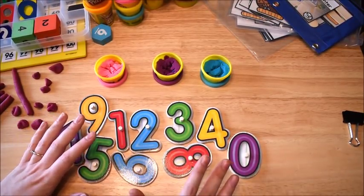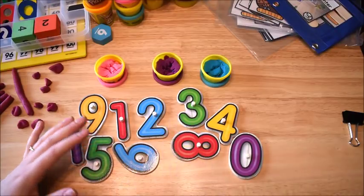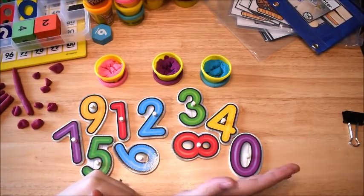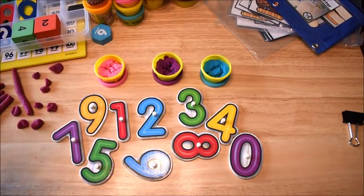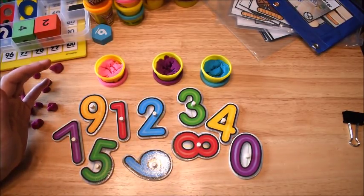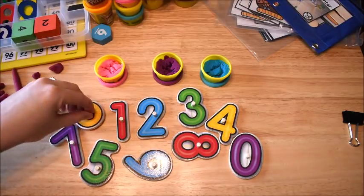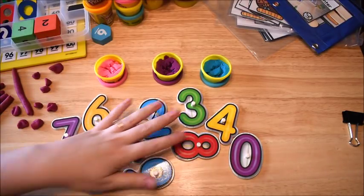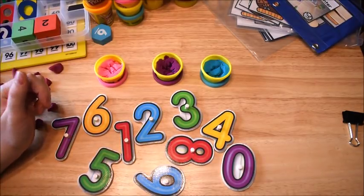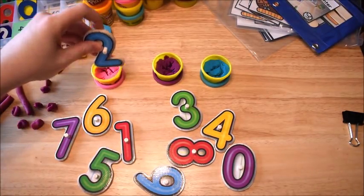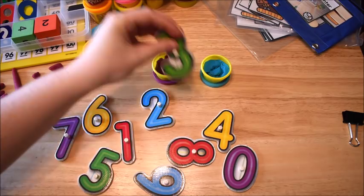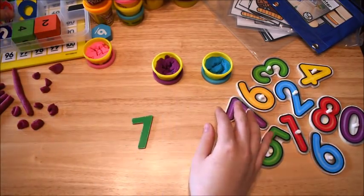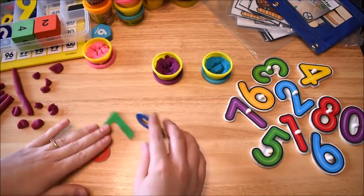The next activity is just something that we do sometimes to practice putting numbers in sequence or like missing numbers. So that's a really important concept for kids, missing numbers and sequencing numbers. So what I did is I pulled out these puzzle pieces, actually they might be a little bit too big. Instead, I might use some magnetic numbers for this.